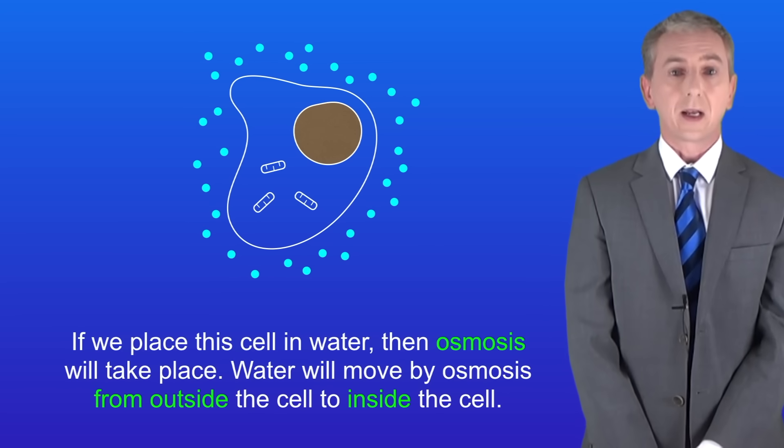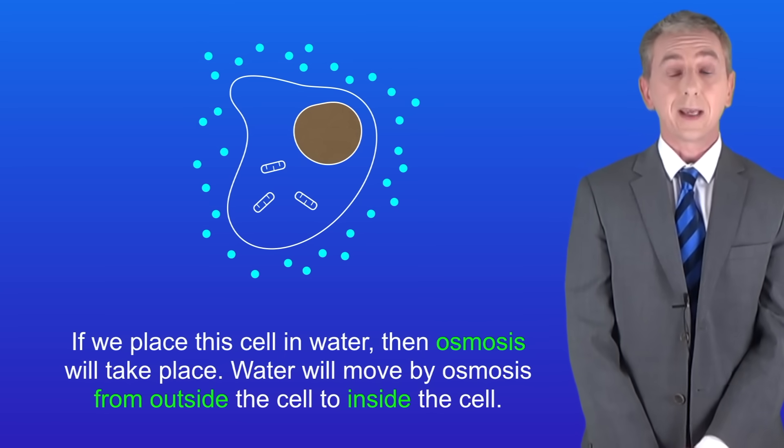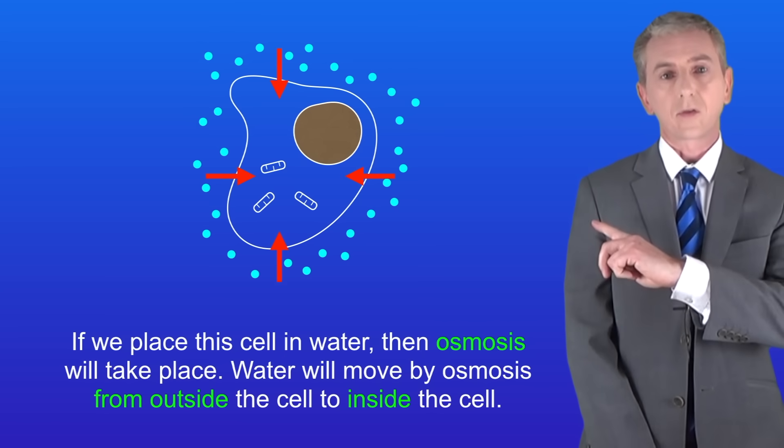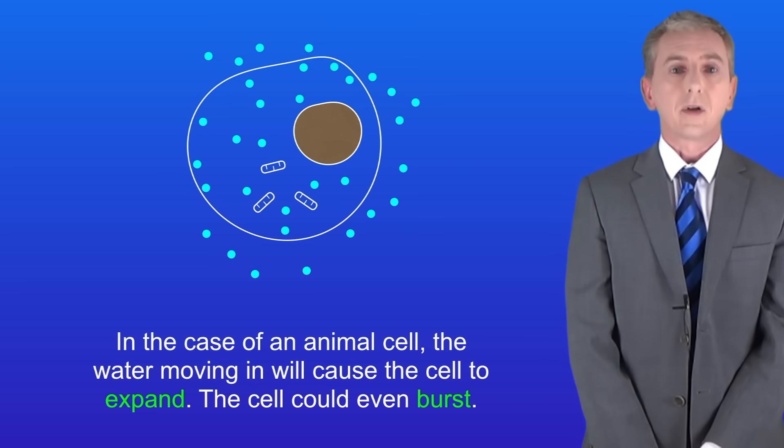If we place this cell in water then osmosis will take place. Water will move by osmosis from outside the cell to inside the cell like this. Now in the case of an animal cell, the water moving in will cause the cell to expand and it could even burst.